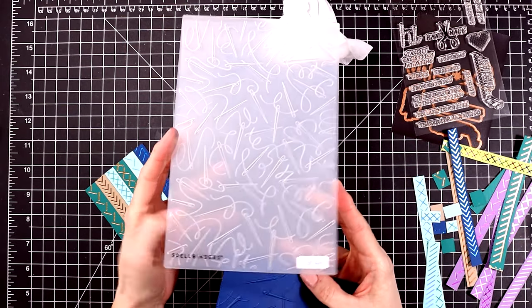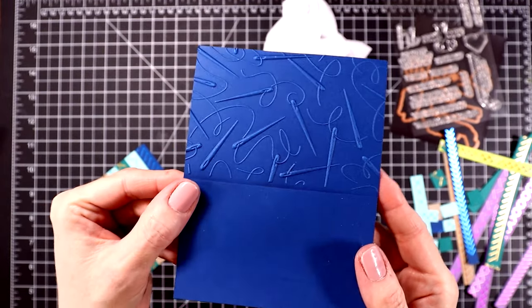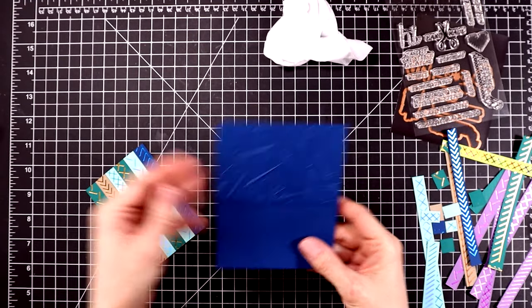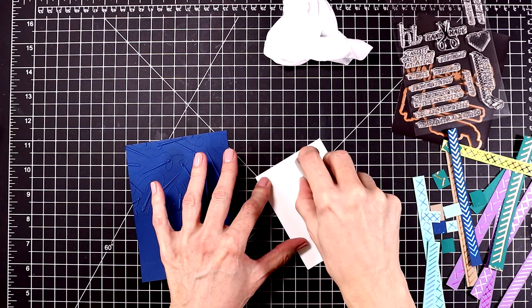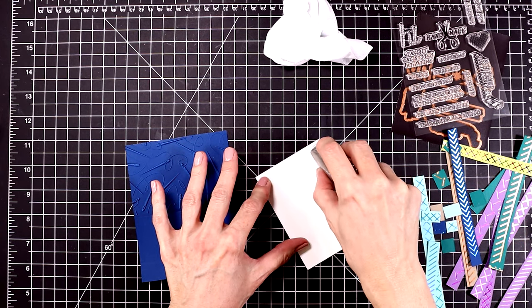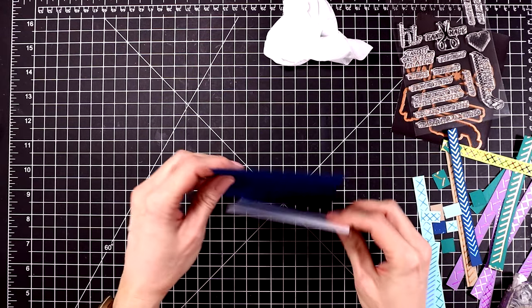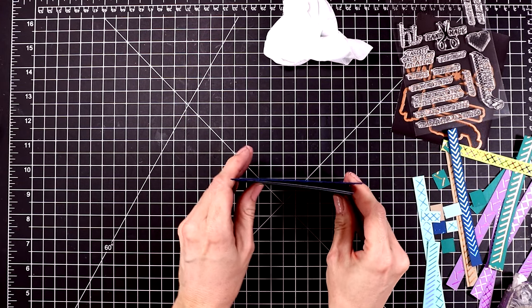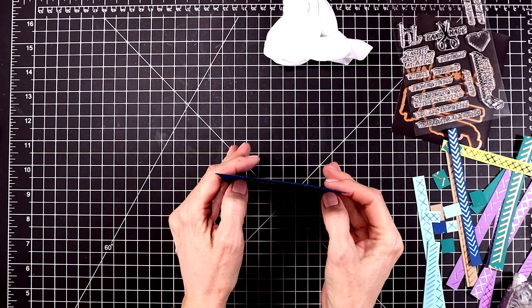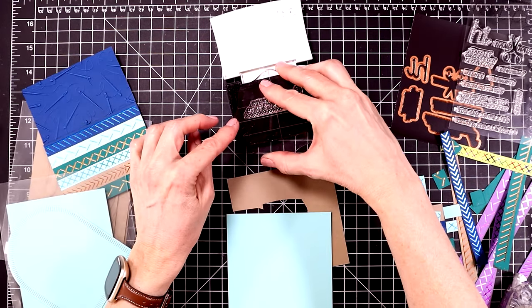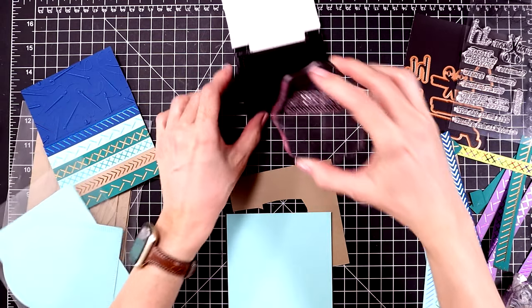And here it is. It looks so cute, embossed with these needles and the threads. And then I'll simply add some more tape runner behind this panel and attach it to the cosmic blue cardstock.